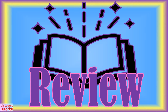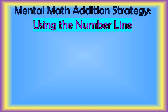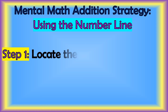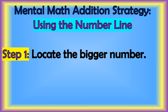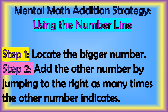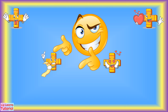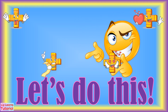Let's review! Steps to follow in addition using the number line. Step 1: locate the bigger number. Step 2: add the other number by jumping to the right as many times as the other number indicates. Now that you know how to add using the number line, it's your turn to find the sum of the given numbers. Let's do this!